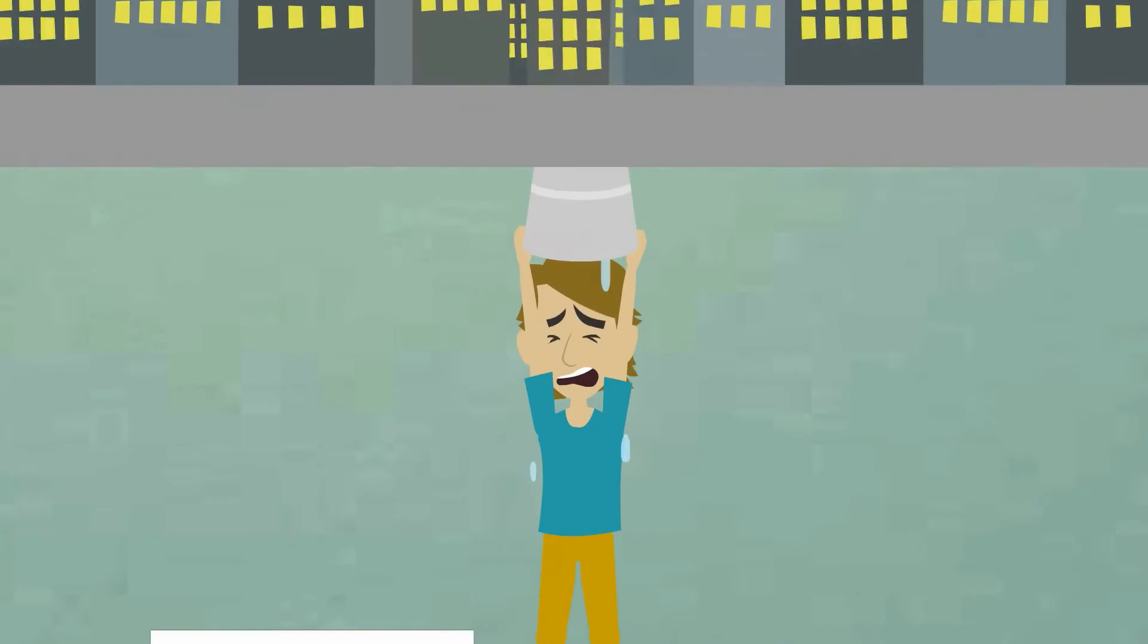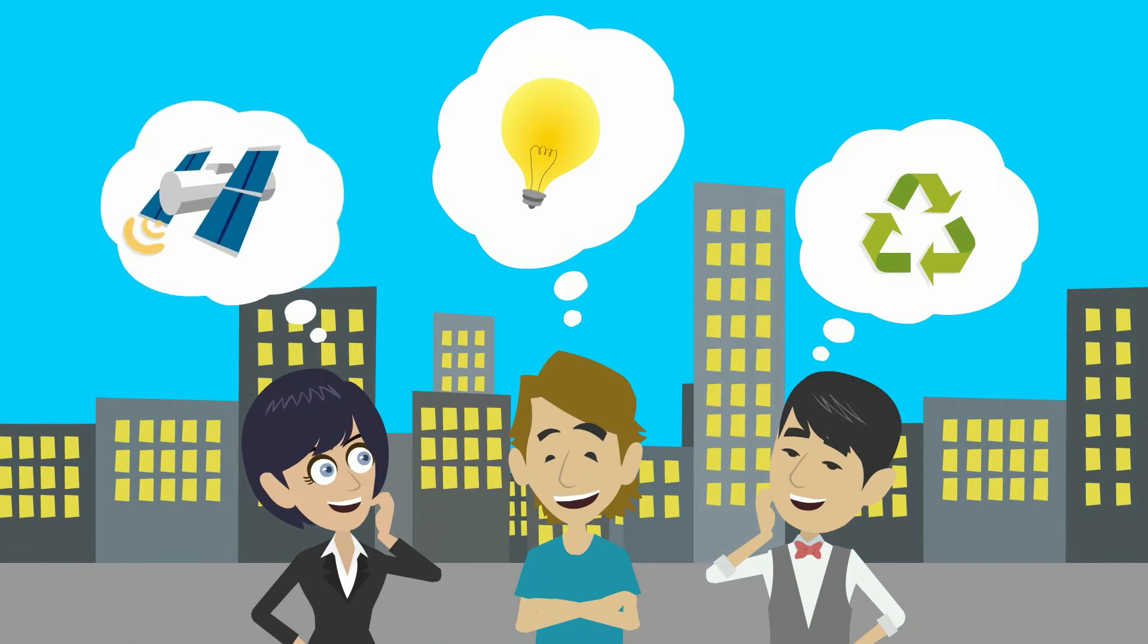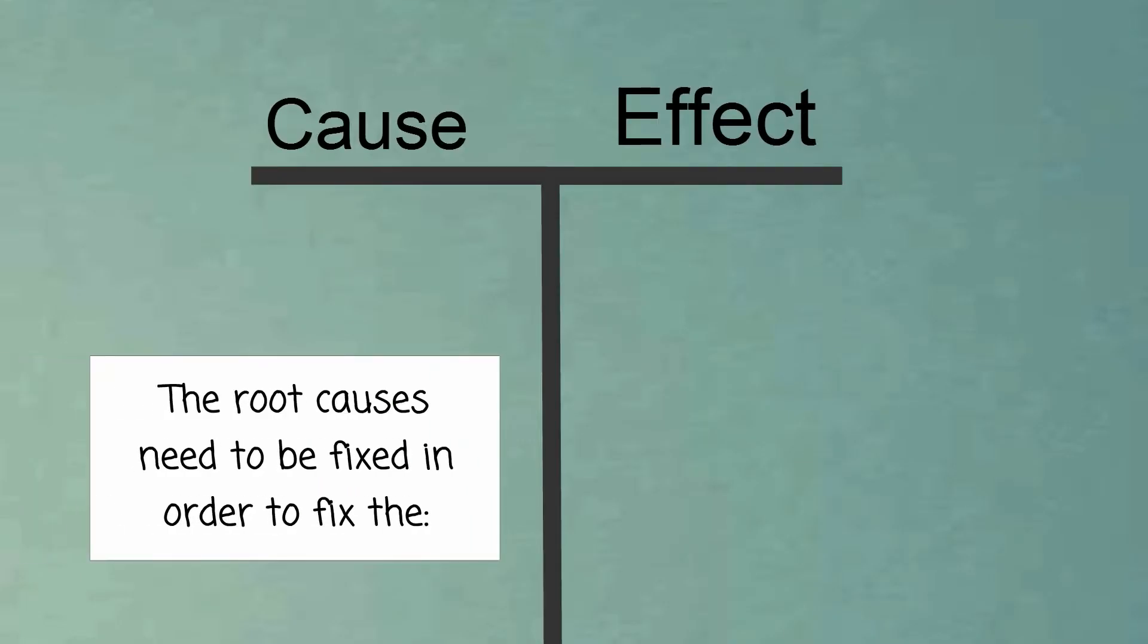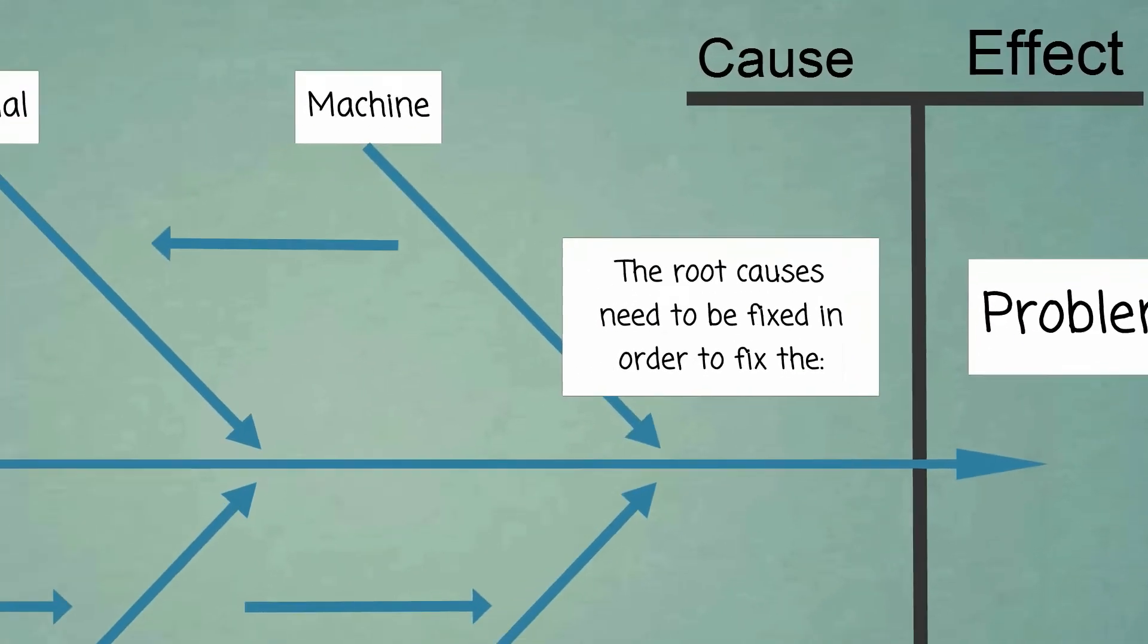The causes can be identified, for instance, through brainstorming by people who are familiar with the problem. When all the causes are known, they can be used to help solve the problem. However, the root causes need to be fixed in order to fix the effect.